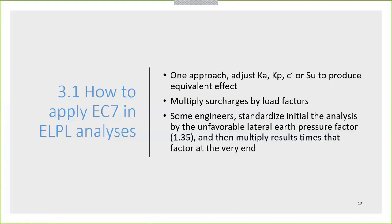There are a couple of ways of modeling a non-linear response with Eurocode 7. One approach would be to adjust the KA, KP, effective cohesions, and undrained shear strength to produce an equivalent. However, Eurocode 7 allows us to standardize the analysis using the unfavorable lateral pressure factor of 1.35, then multiply that result at the end of the analysis to come back with an equivalent SLS approach or overall safety factor — and we think that's the best way for non-linear analysis.